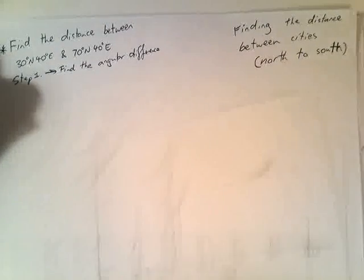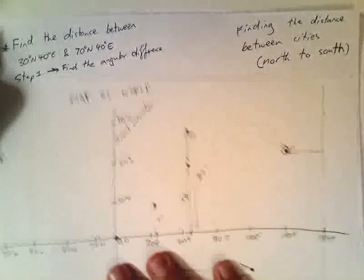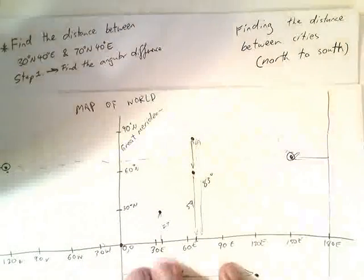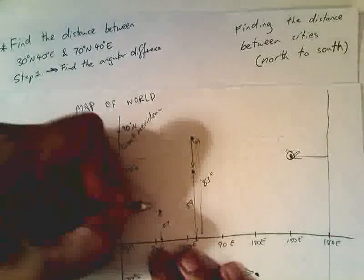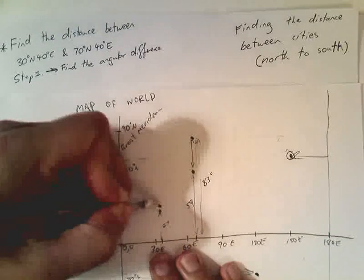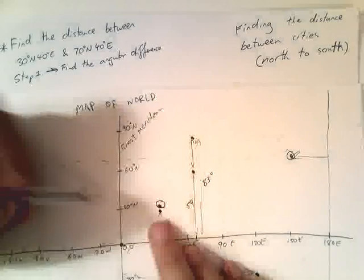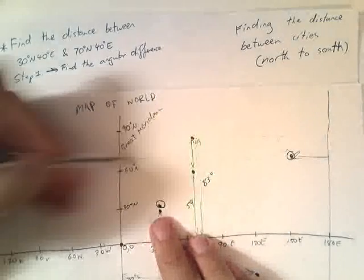Now I like to get out my map, which I prepared earlier. I need to find the distance between these two points: 30 degrees north, 40 degrees east, which is this point here, and 70 degrees north, 40 degrees east.